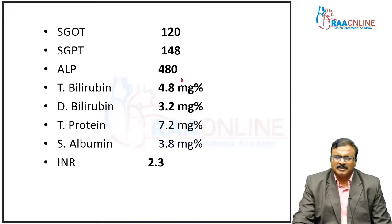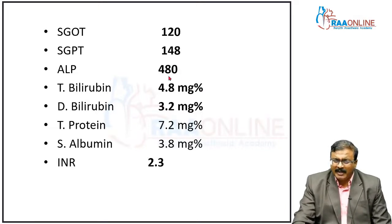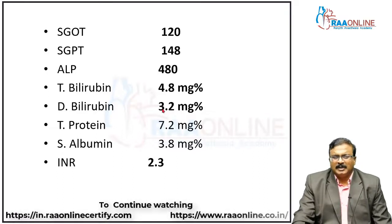Alkaline phosphatase elevation is specific for leptospirosis — classically seen in leptospirosis. Other infections where you get alkaline phosphatase elevation include tuberculosis: disseminated tuberculosis and hepatic tuberculosis, and also obstructive jaundice. Classically in leptospirosis, alkaline phosphatase is elevated. In complicated malaria — which was the second option — you typically see indirect hyperbilirubinemia; the direct bilirubin will be around 1.2 or 2, and indirect will be more than direct, which strongly suggests malaria.